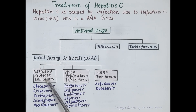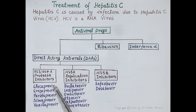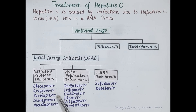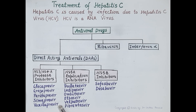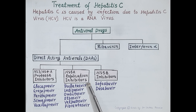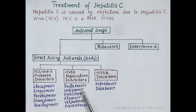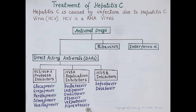Direct-acting antivirals are divided into three subcategories. The first subcategory is NS3/NS4A protease inhibitors, which include drugs like Glecaprevir, Grazoprevir, Paritaprevir, Simeprevir, and Voxilaprevir — all ending with '-previr'. The second subcategory is NS5A replication inhibitors, which include Daclatasvir, Ledipasvir, Ombitasvir, Elbasvir, Velpatasvir, and Pibrentasvir — all ending with '-asvir'.